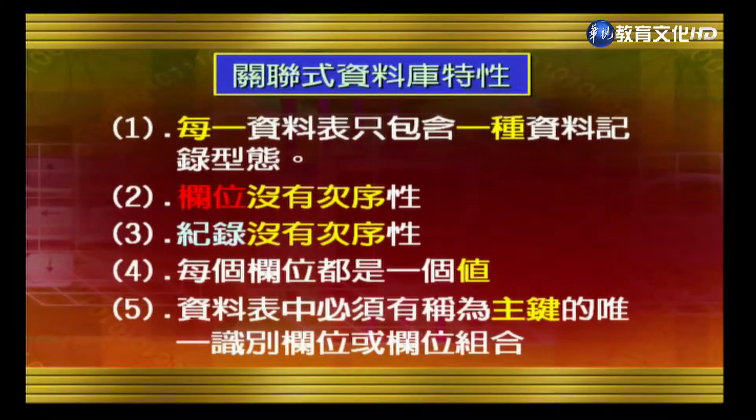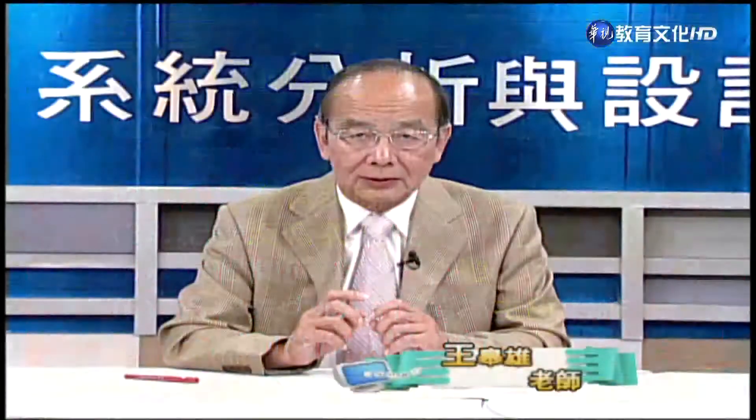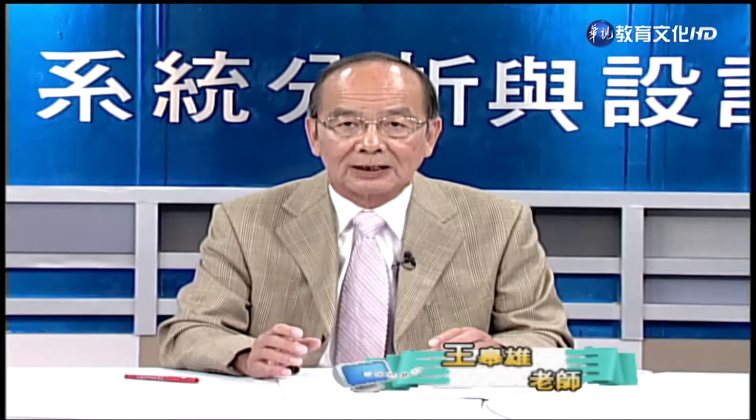Each table must have a key — a component that is the unique identifier for a record. This key can be a single field or a combination of several fields. Another characteristic of relational databases: whereas file-oriented systems have many separate files for each information system, a database system may have only one or two databases that encompass all those files, expressed not as files but as data tables.